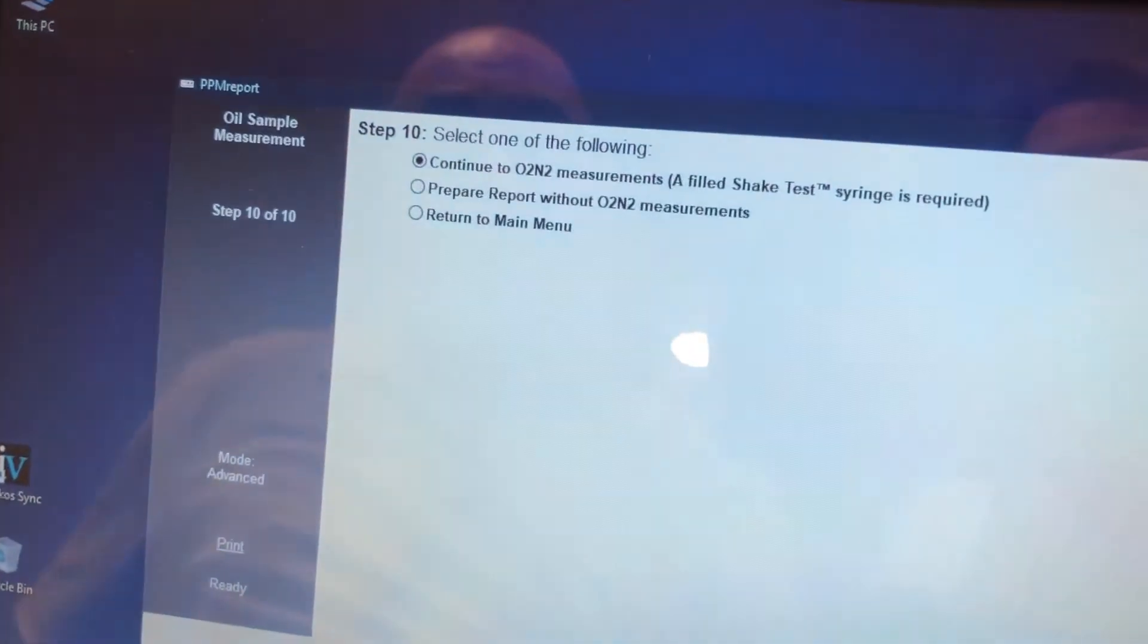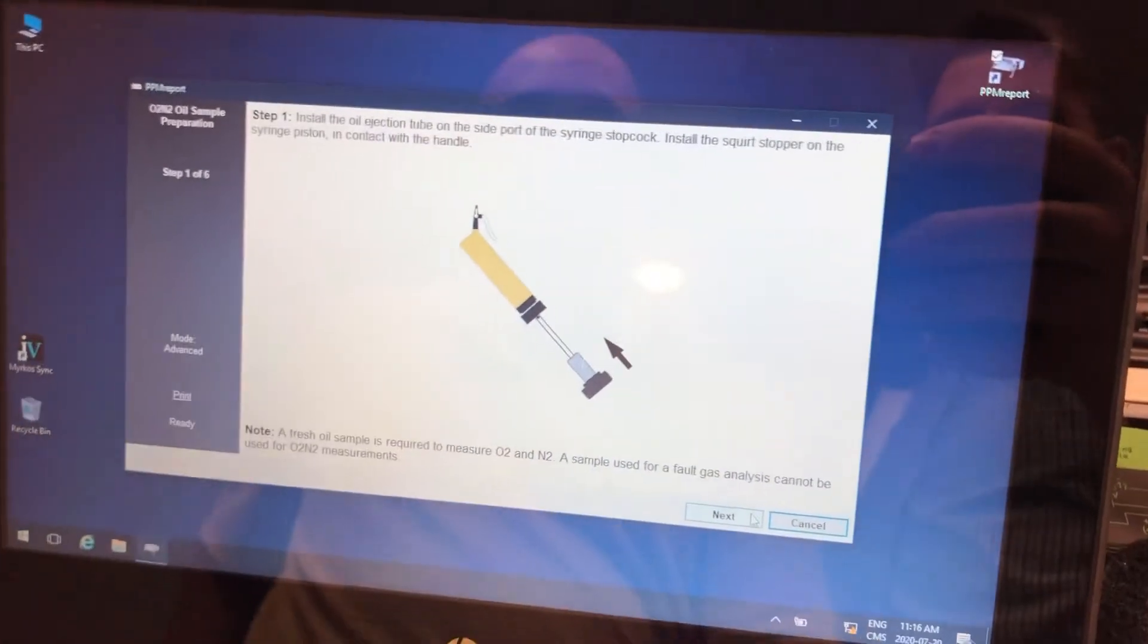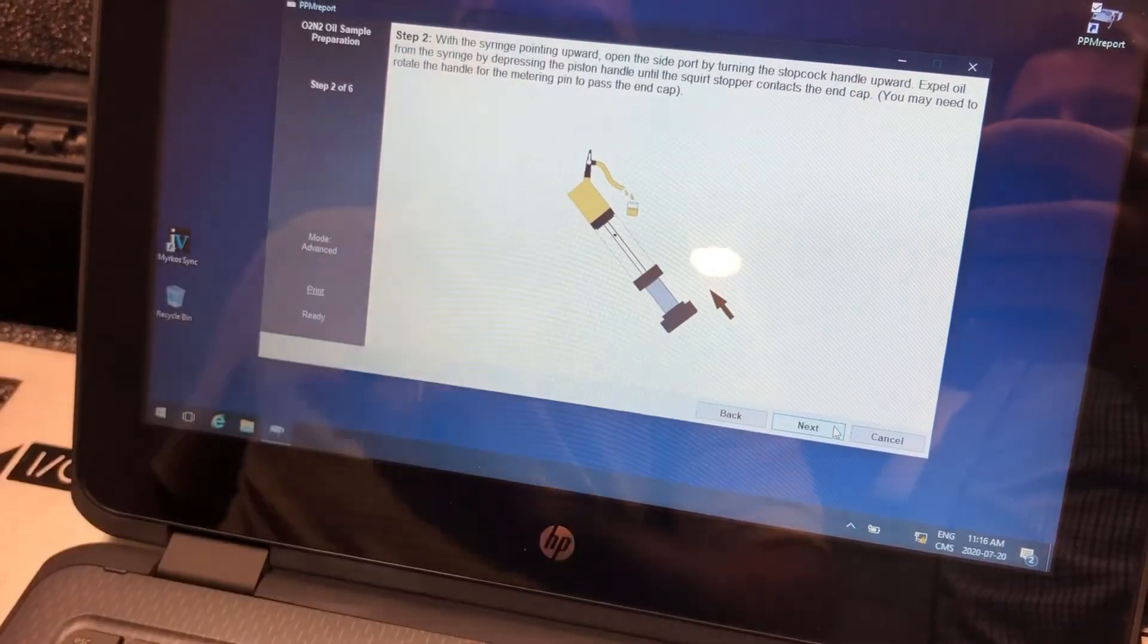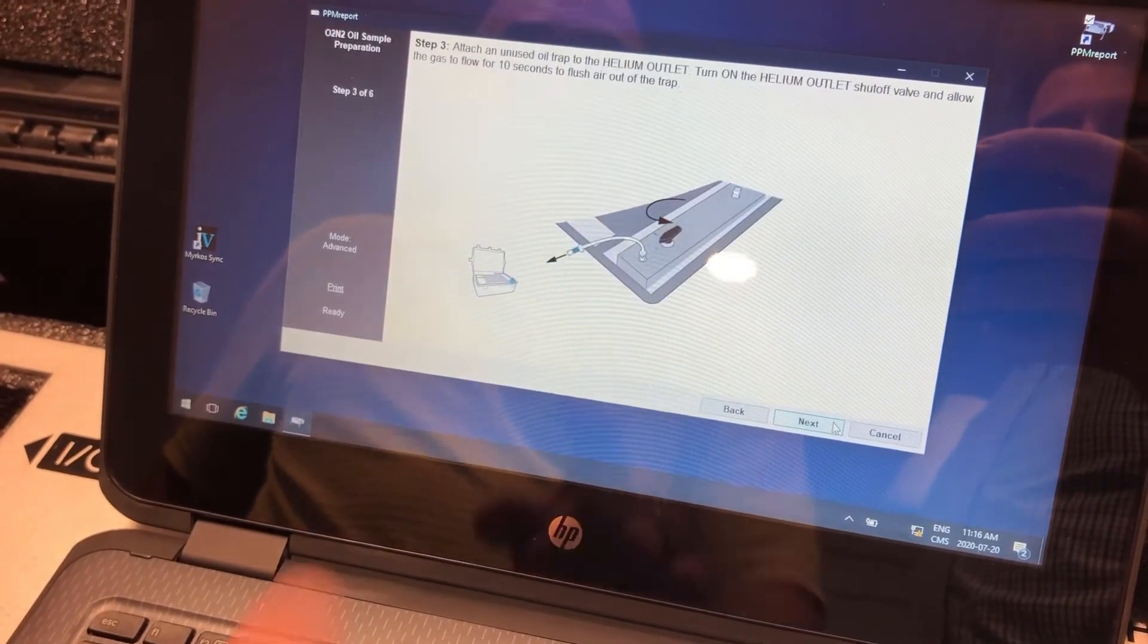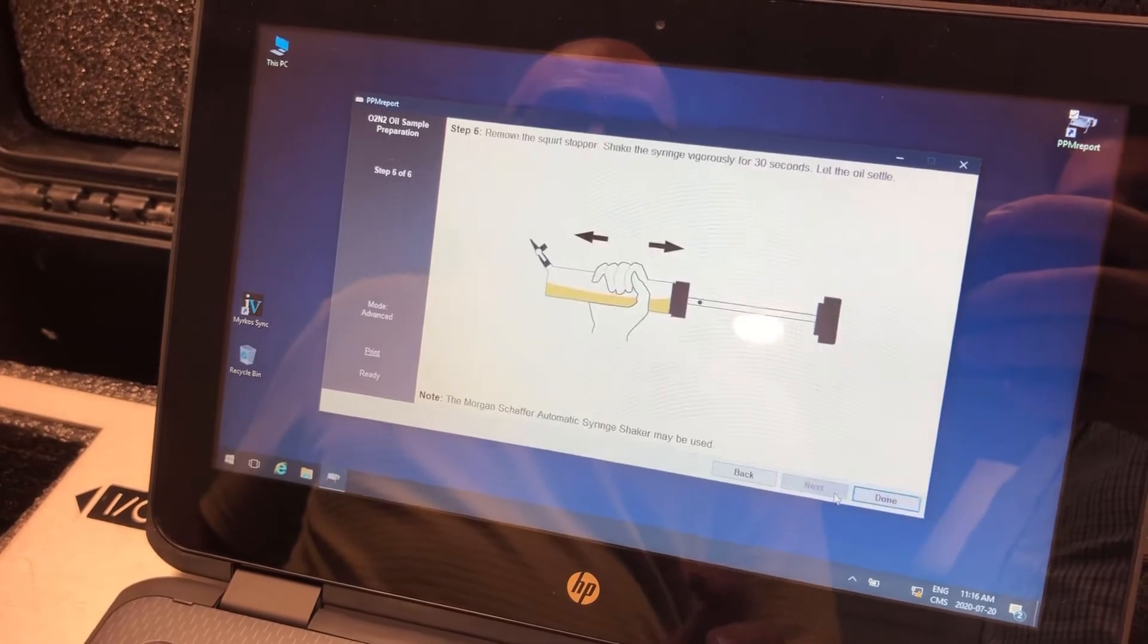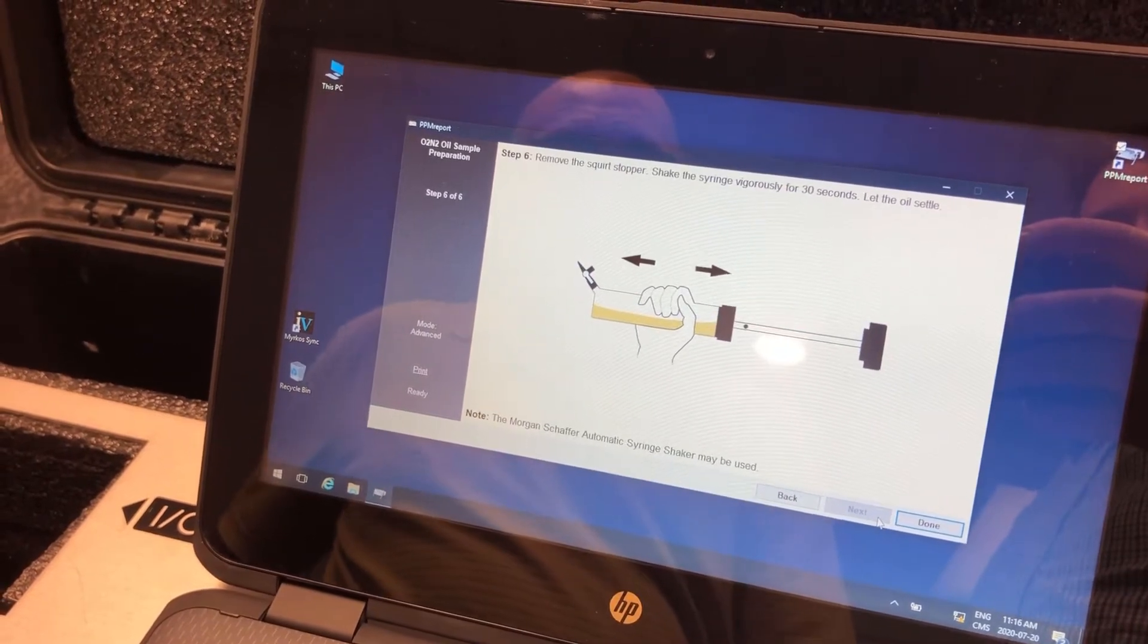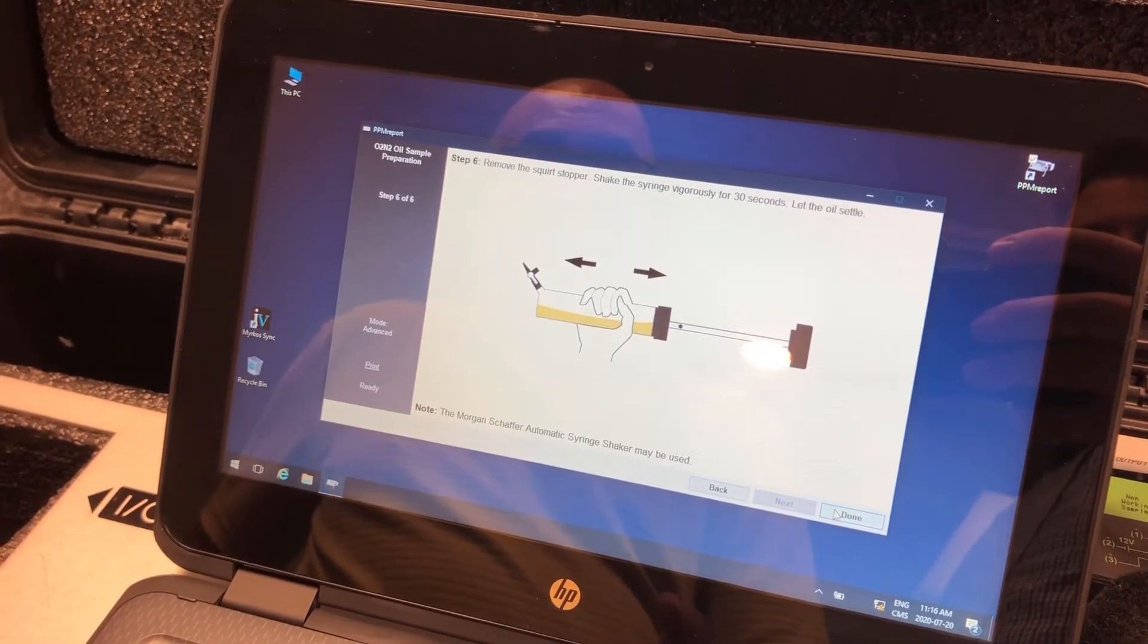So, we go back to the PPM report. So we're going to continue to oxygen-nitrogen measurement. So you click done. And again, step by step, we'll explain to you exactly what you have to do as far as filling up the syringe, using the squirt test part to remove the majority of the oil, and fill it up with helium. And then, do a shake test for one minute. So this is mostly the same procedure with the oxygen-nitrogen from a shake test point of view that you use for the seven gas.